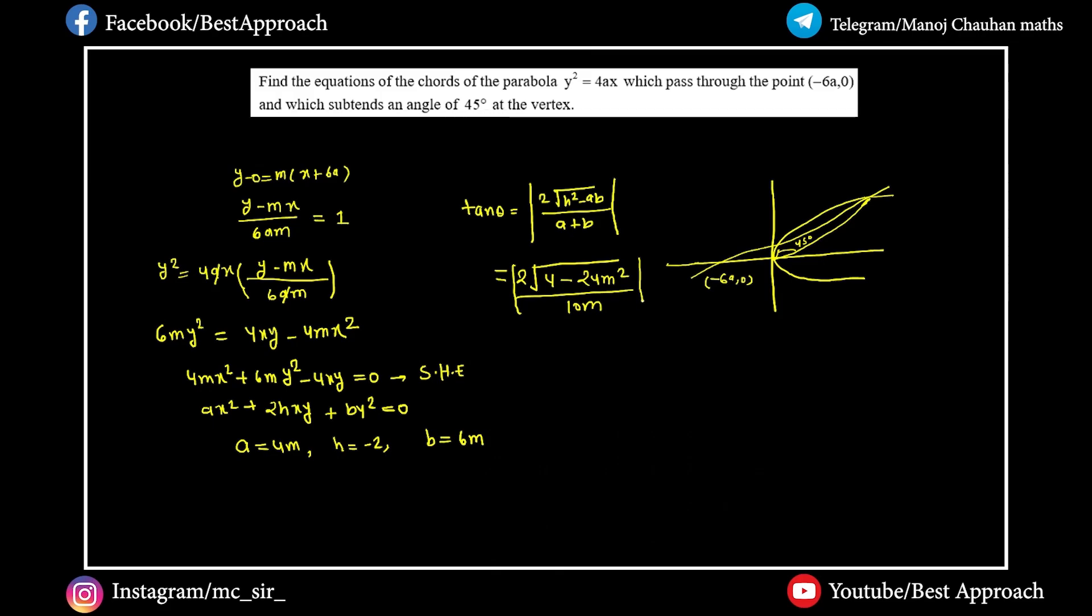So tan 45=1. Squaring both sides, we get 100m² equals 4-24m², which gives 16-96m².